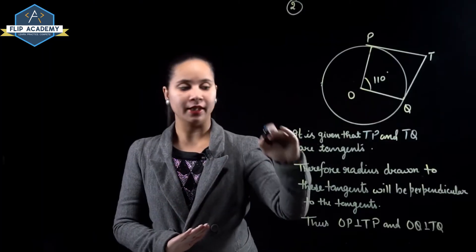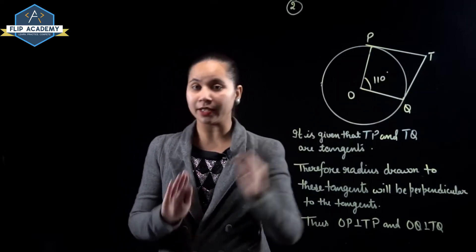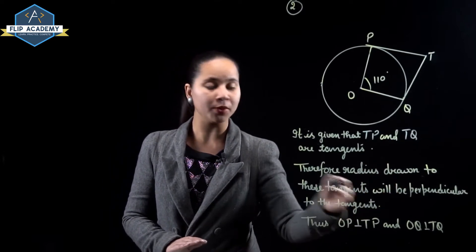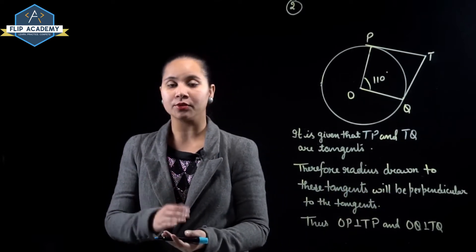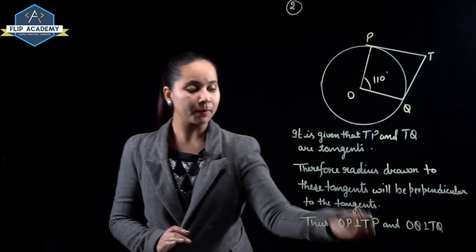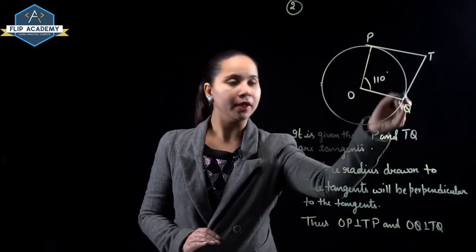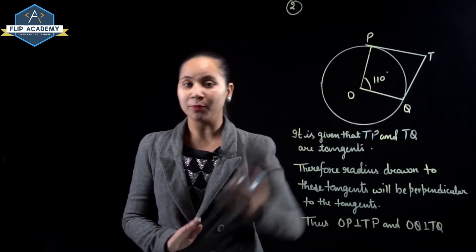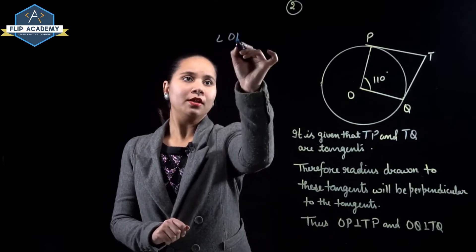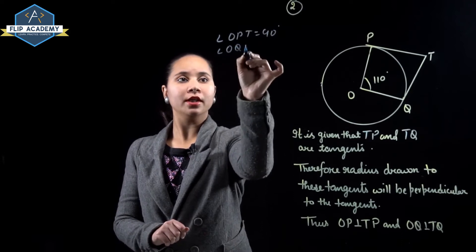TP and TQ are tangents. Therefore, the radius drawn to these tangents will be perpendicular to the tangent. So OP is perpendicular to TP, and OQ is perpendicular to TQ. This means angle OPT is equal to 90 degrees and angle OQT is also equal to 90 degrees.